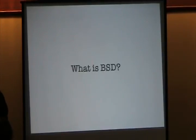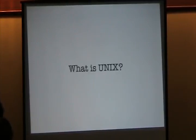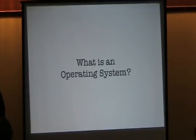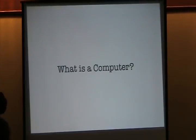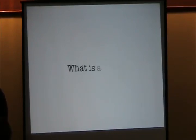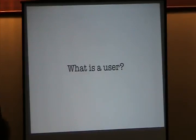So what is BSD? BSD is a derivative of Unix. So what is Unix? Unix is an operating system. What's an operating system? An operating system is the soul of a computer. But what's a computer? A computer is a tool, basically a glorified calculator, that enables users to accomplish tasks better. So what is a user? A user is someone who operates a computer. They tend to stand upright, sort of like me.